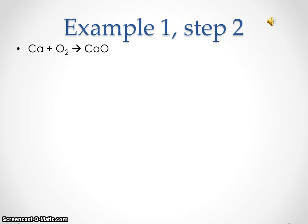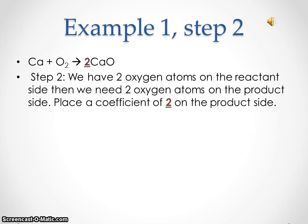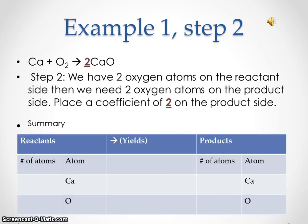Example one, step two. In the previous equation, we had calcium plus oxygen yielding calcium oxide. We have two oxygen atoms on the reactant side, so we need two oxygen atoms on the product side. Place a coefficient of two on the product side. Now on the reactant side we have one calcium atom and two oxygen atoms. On the product side, we now have two calcium atoms and two oxygen atoms.